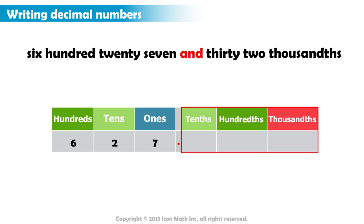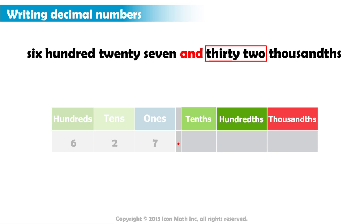What do we write in those places? Look at the words before the thousandths. They are read as 32. So, we have to write 32 in those places. But we don't just write 32 anywhere. We need to represent exactly 32 parts out of 1,000.